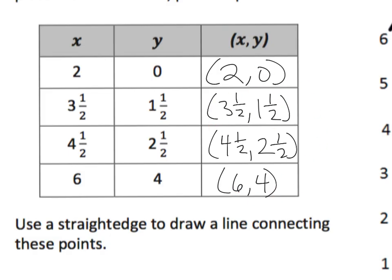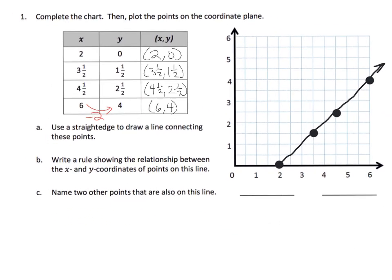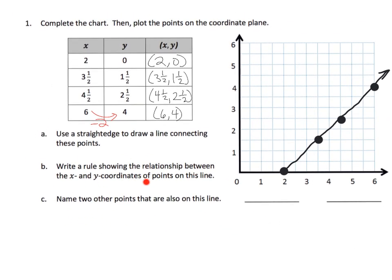Now let's check the fractions: three and a half minus two equals one and a half — that works. Four and a half take away two equals two and a half — that works too. So my rule is: take the x value, subtract by two, and that gives the y value. Parents and teachers, you could also write this as y = x − 2, which is the classic algebra form.